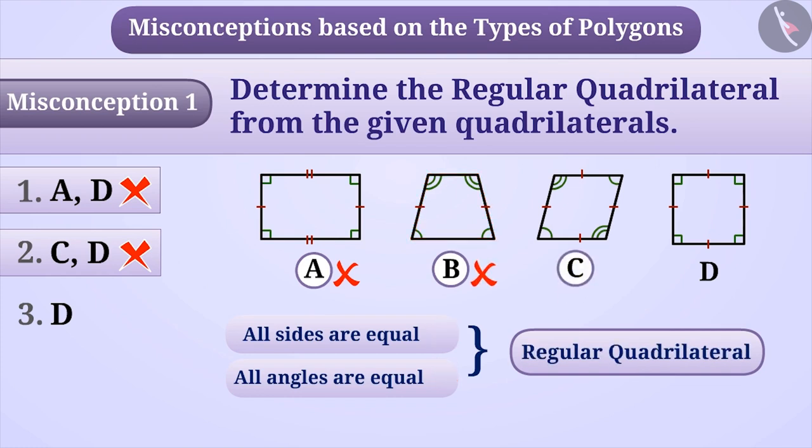In figure C, all the sides are equal, but all the angles are not equal, so it is also not a regular quadrilateral.